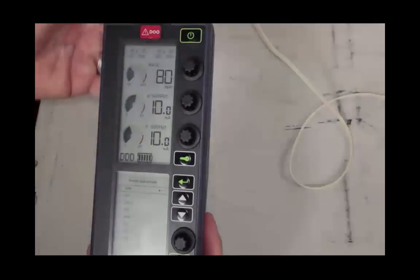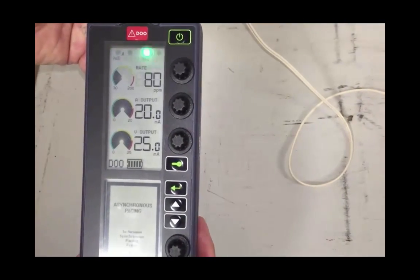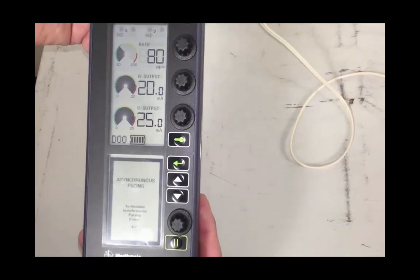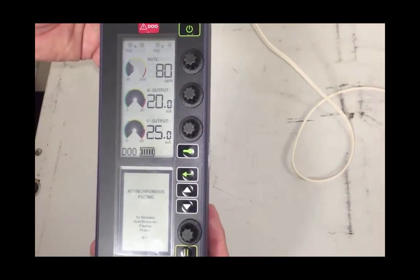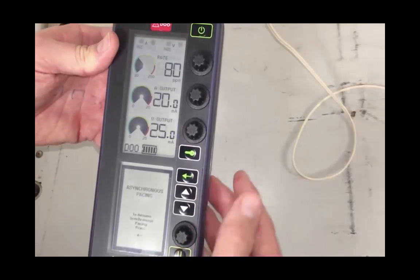In the event that you'll need to emergently pace, you'll do so in an asynchronous mode. The emergency pace button is at the top of the device, and the defaults go to 80 pulses per minute and maximum atrial and ventricular output. Again, the mode is DOO, dual chamber pacing.